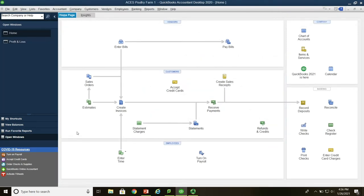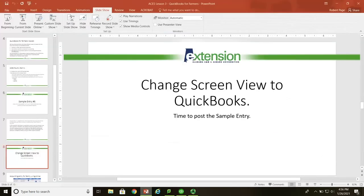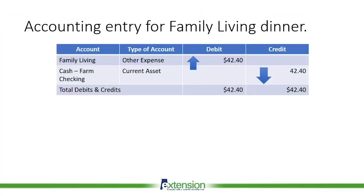So that completes that particular entry. The accounting entry for the family dinner is: family living, which is an other expense account, is debited $42.40. The offsetting entry is cash farm checking, which is a current asset, credited for $42.40. Total debits and credits are $42.40.